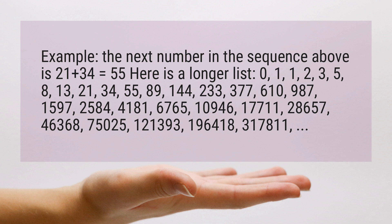Continuing the Fibonacci sequence: 233, 377, 610, 987, 1597, 2584, 4181, 6765, 10946, 17711, 28657, 46368, 75025, 121393, 196418, 317811.